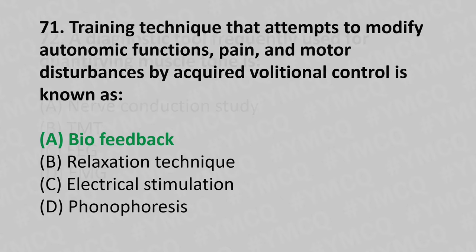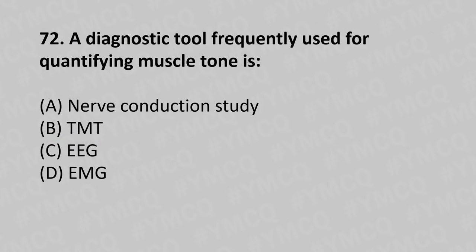Moving to our 72nd question. A diagnostic tool frequently used for quantifying the muscle tone is: Option A, Neuroconduction study; Option B, TMT; Option C, EEG; Option D, EMG. And the answer is Option D, EMG.